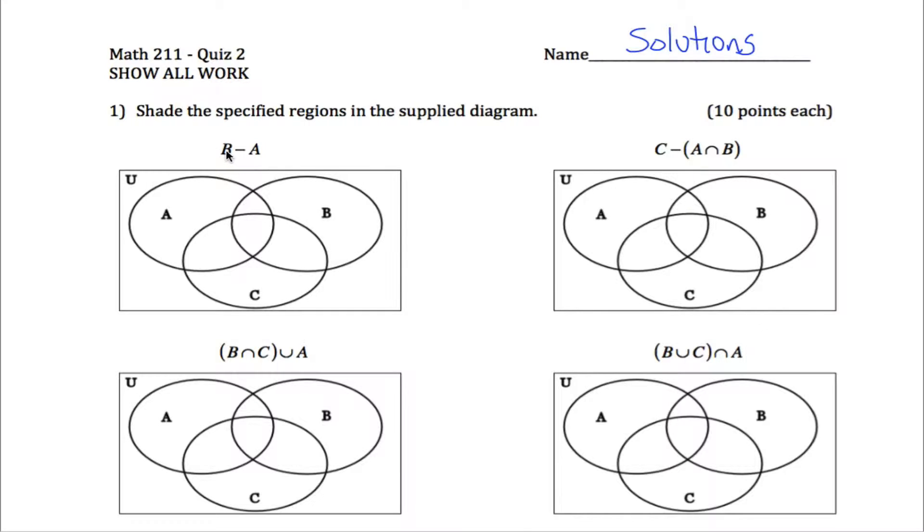For this first one, you want to find the difference of B and A. Start out with B, so start with this entire circle right here, and then get rid of anything from this circle that happens to fall in this circle. What you would have left would be this shaded region. Almost all of B, just get rid of that little bit that's also in A.